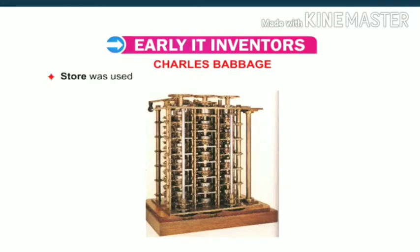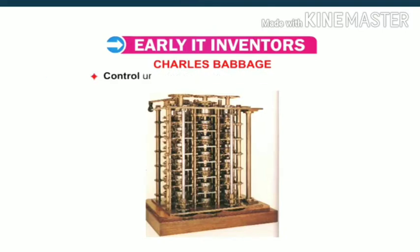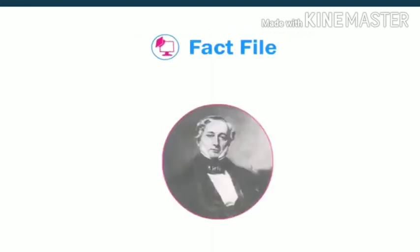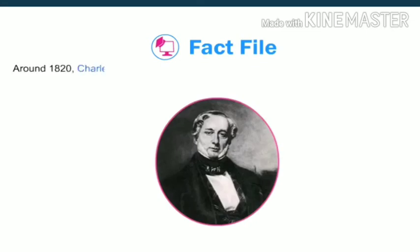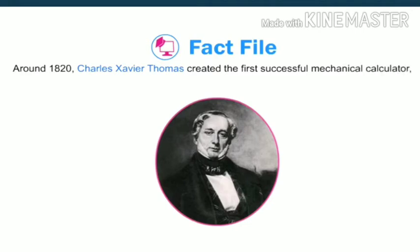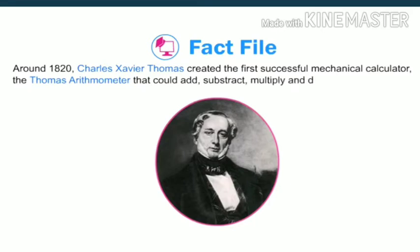Store was used for storing data, mill was the calculating unit, and the control unit was used for supervising all the units. Note that around 1820, Charles Xavier Thomas created the first successful mechanical calculator, the Thomas Arithometer, that could add, subtract, multiply and divide, based on Leibniz's work.